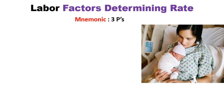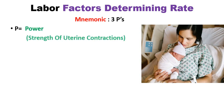The first P is Power. You have to remember the power from the strength of the uterine contractions which are occurring during the labor. This is the first factor determining the labor.